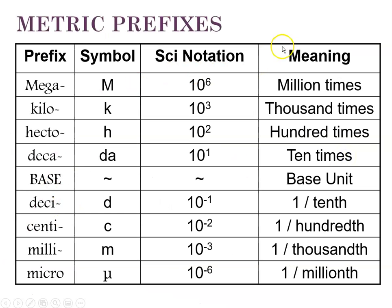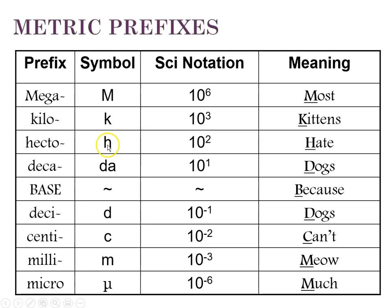The metric prefixes tell you the magnitude of the number. Capital M means mega, a million of whatever your base is. Kilo is a thousand or ten to the three. Hecto is ten to the two or a hundred. Deca is ten. The base would be ten to the zero. Deci is a tenth, centi is a hundredth, milli is a thousandth, and micro, the Greek letter mu, is a millionth.